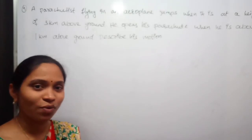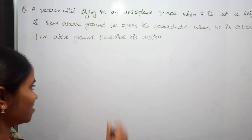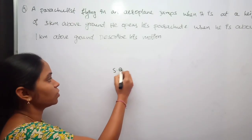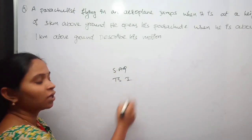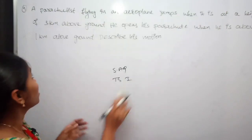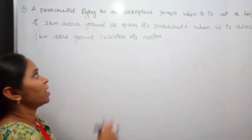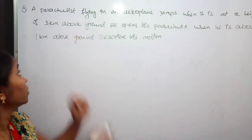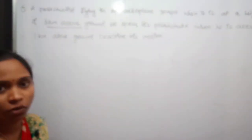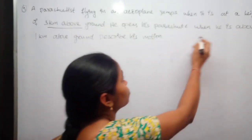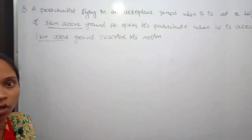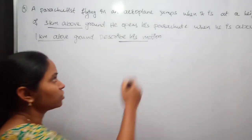Hello students, welcome to Swapna Physics Classes. In this class I am going to teach you one more important short answer question for your first year IPE examination. The question is: a parachutist is flying in an aeroplane, jumps when it is at a height of three kilometers above the ground, and opens his parachute when he is about one kilometer above the ground. Describe his motion.